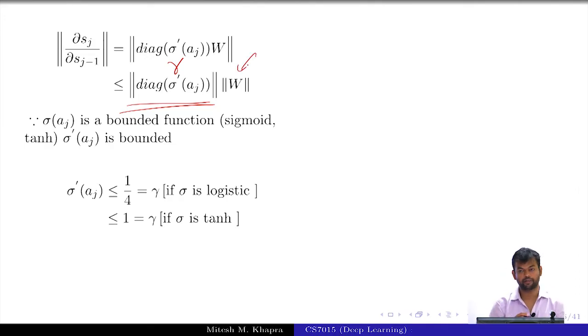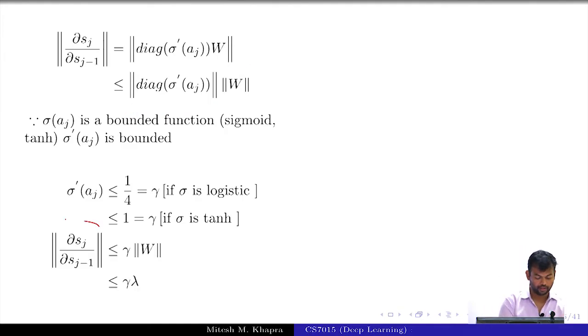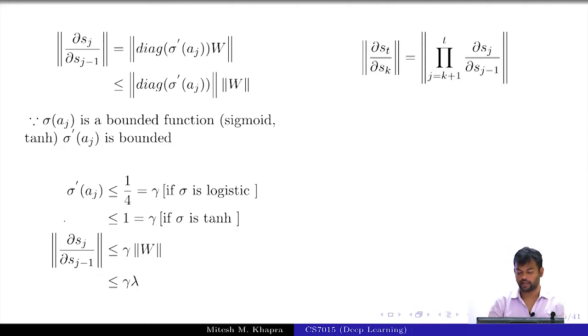That means, this magnitude is actually going to be upper bounded by something. And I will just call it as lambda, sorry as gamma. So, this quantity is bounded and I am going to call that bound as gamma. What about our weight matrix? It is again bounded. We have real weights, we do not have very large weights, it is all bounded. So, it is still going to be some upper bound on this and I will call this magnitude as gamma. So, this quantity on the left hand side, I can say that it is less than equal to some gamma into lambda.